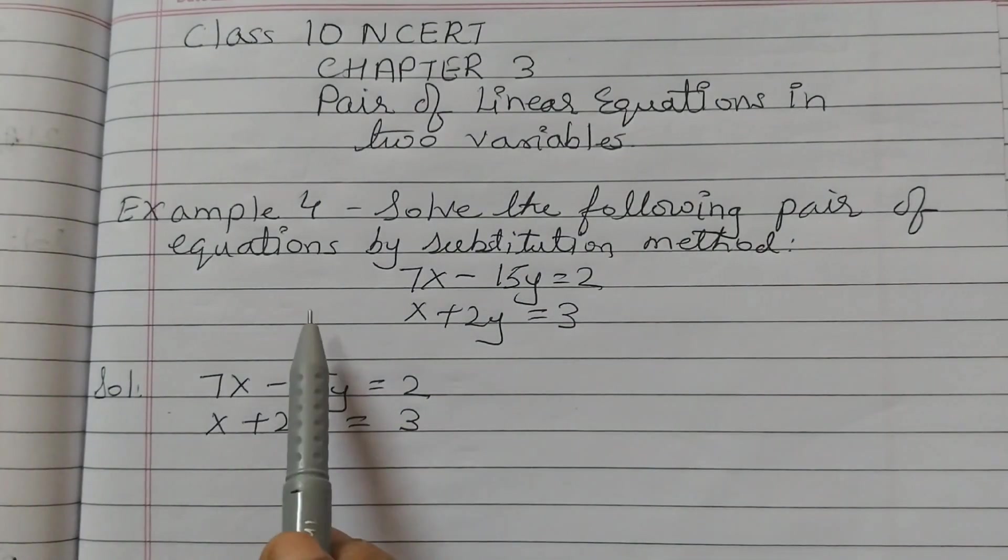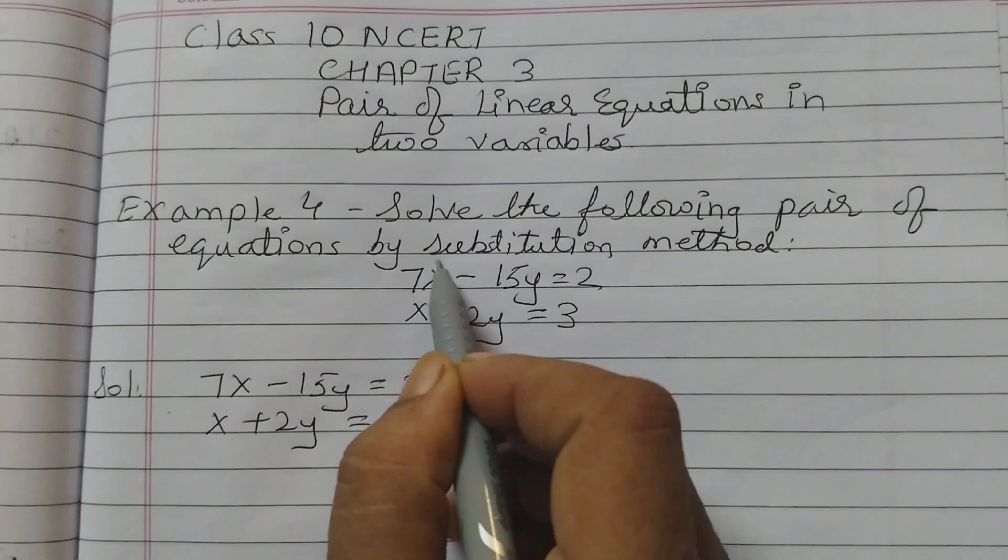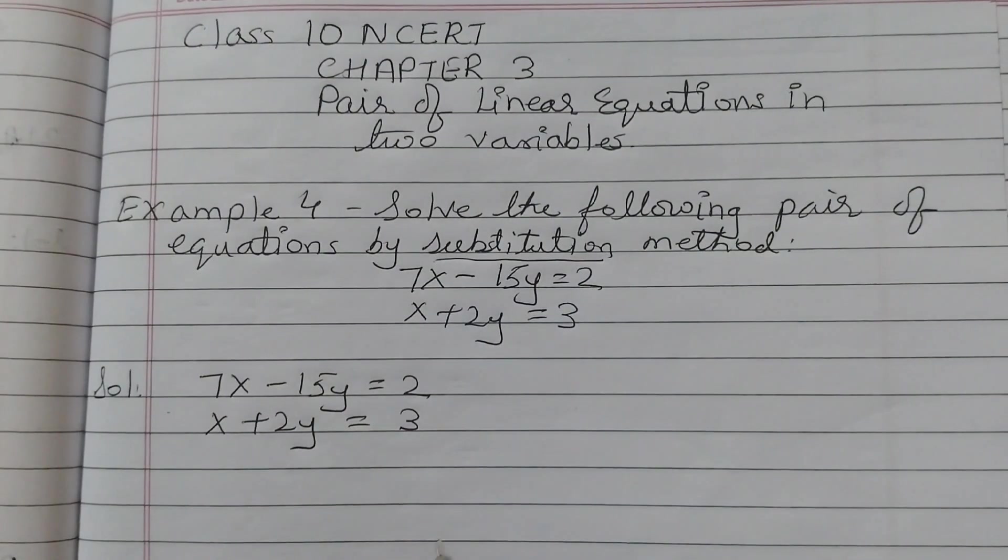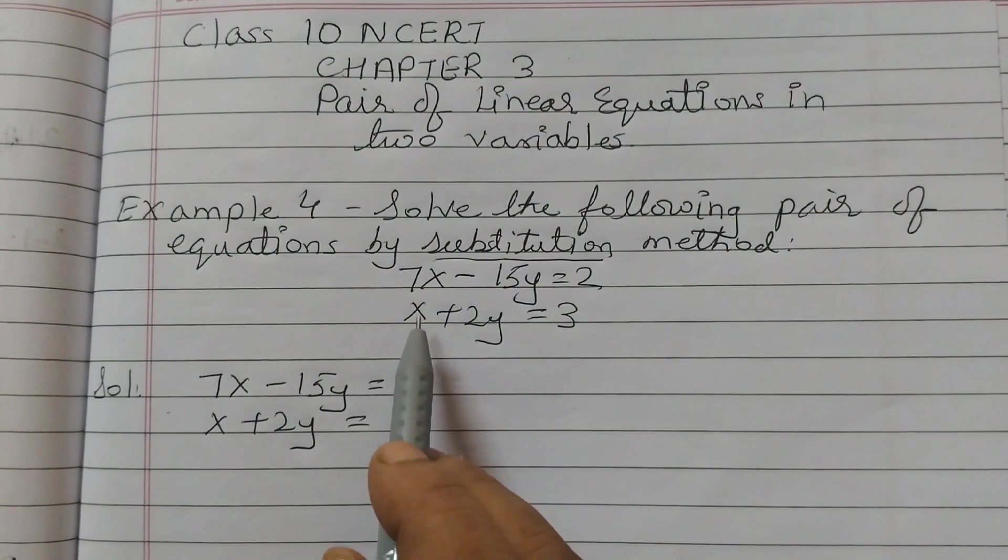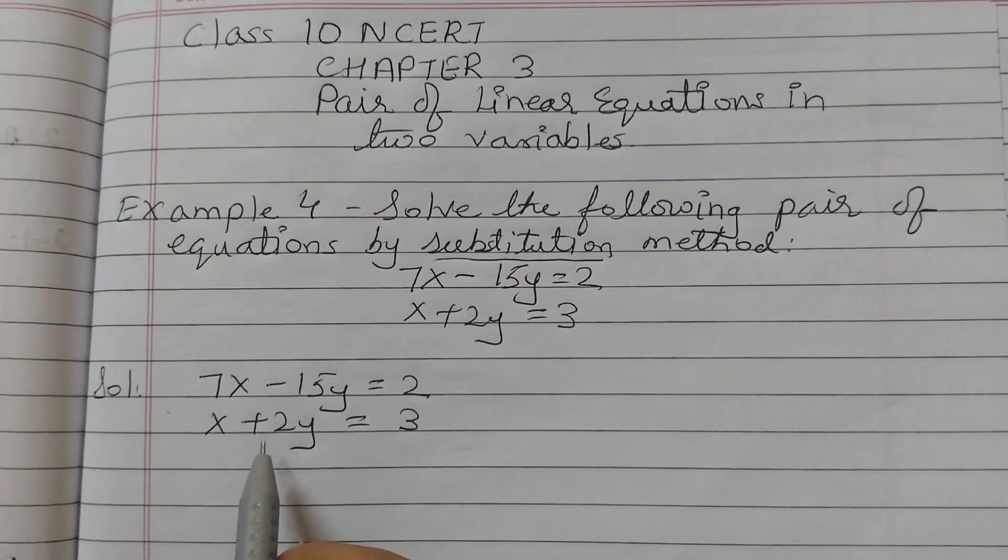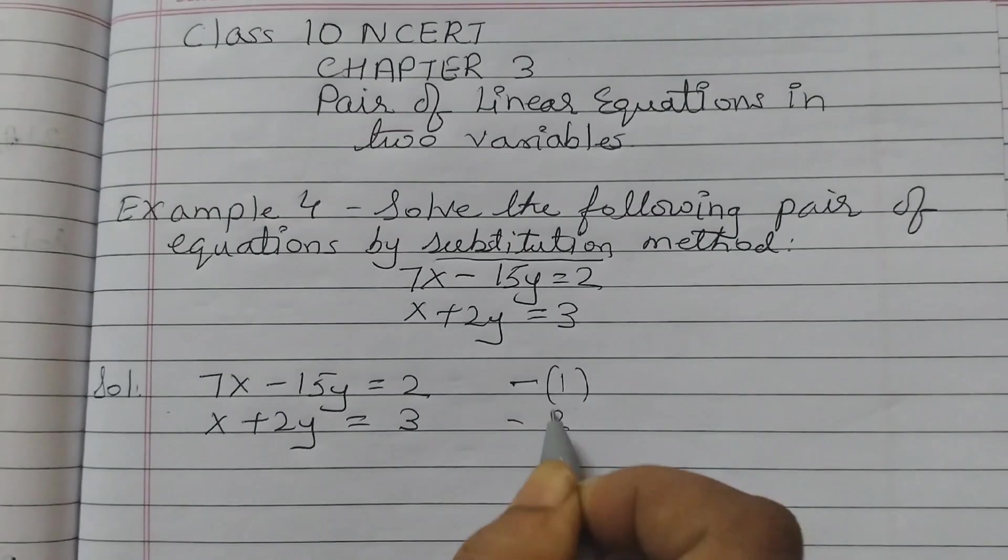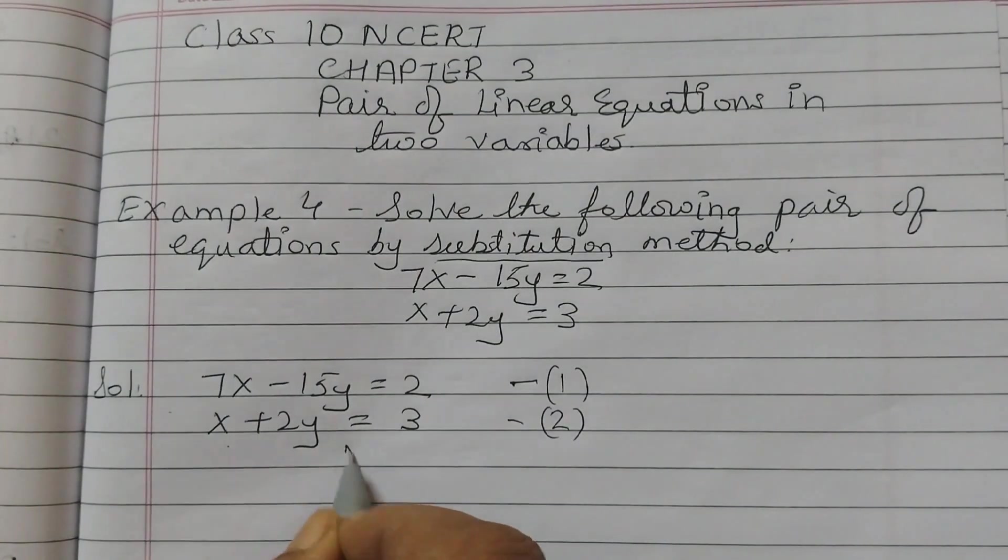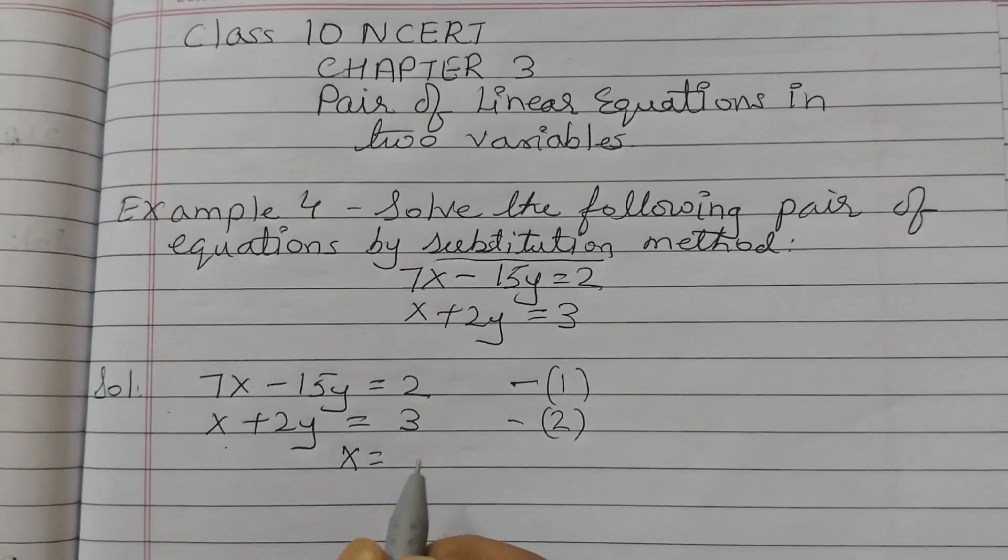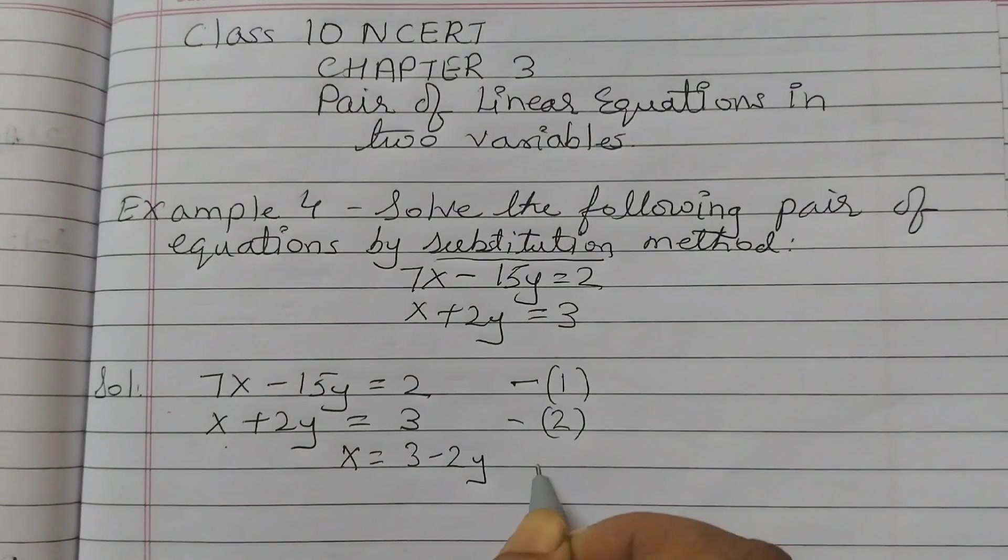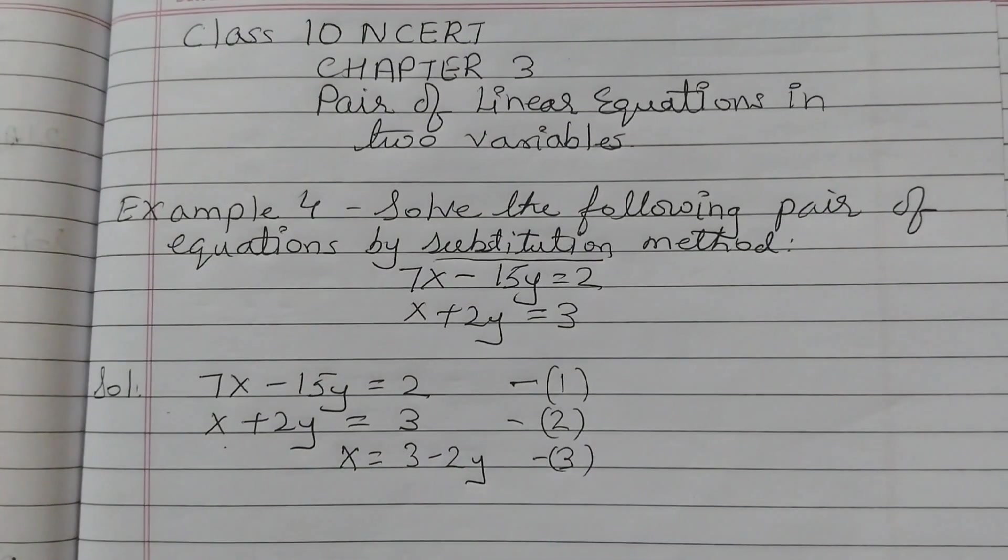Solve the following pair of equations by substitution method. First, write the equations as given and label them as equation 1 and equation 2. From equation 2, x can be written by taking 2y to the other side, so x equals 3 minus 2y. This is equation 3.